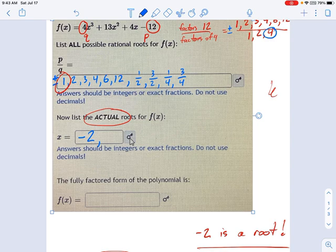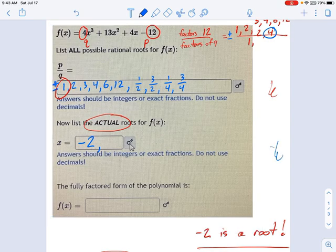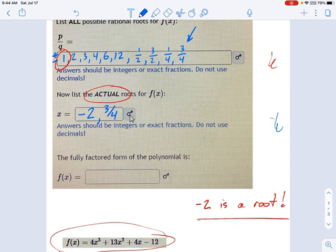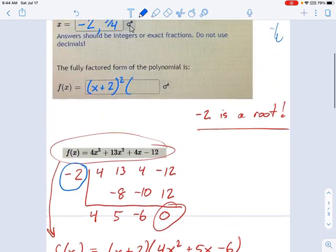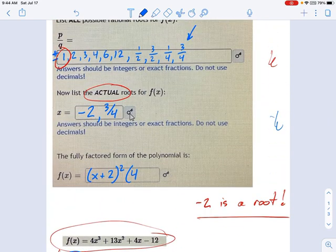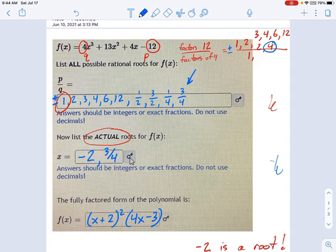Now, if you had, for some reason, maybe you've got an appetite for pain or something. If you had started at the end over here with your fractions, you might have found 3 fourths as one of the actual roots. And then negative 2 at the end. It's not really important what order you find the roots in. But using these roots, we can now write this in fully factored form. This is x plus 2 squared times, what was that again? It was 4x minus 3. So that is how you factor high degree polynomials.